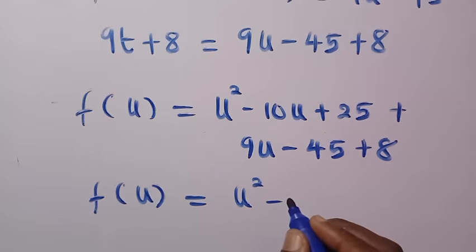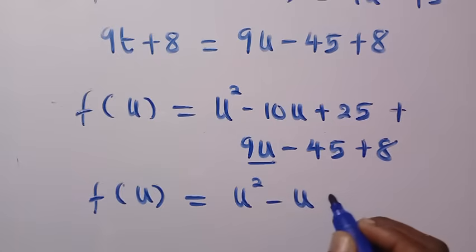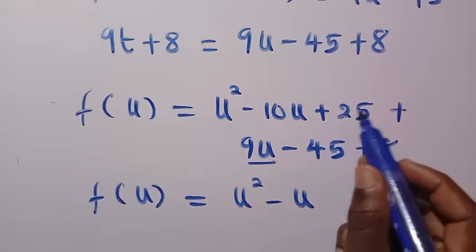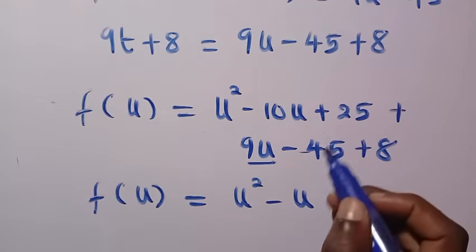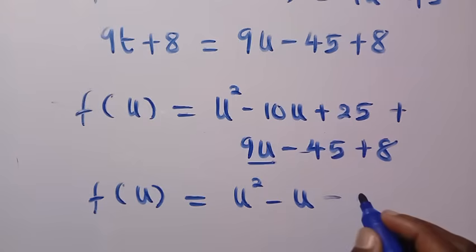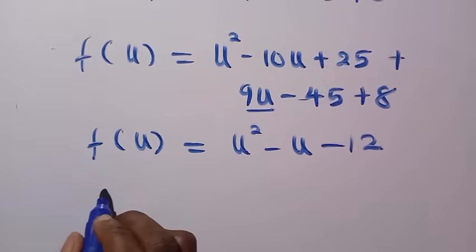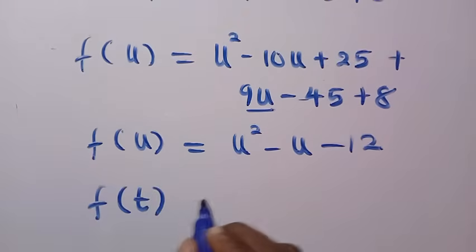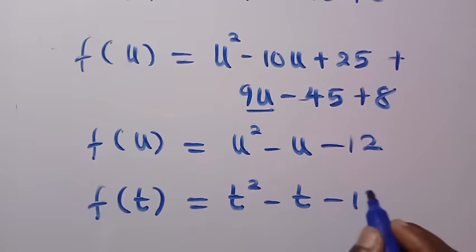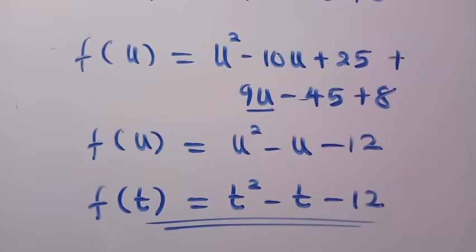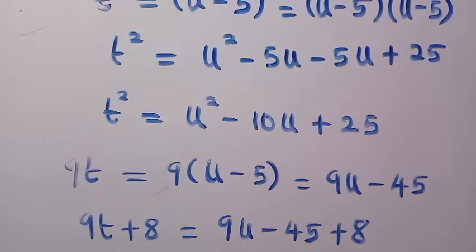Adding everything together: u squared, then minus 10u plus 9u gives minus u, then 25 minus 45 plus 8 gives minus 12. So f(u) equals u squared minus u minus 12. Since we need f(t), we replace u with t, giving f(t) equals t squared minus t minus 12. That's how we solve this problem — thanks for watching, don't forget to subscribe, and see you in the next video. Never stop learning!